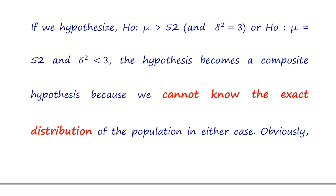These two examples are composite hypotheses because we do not know their exact distribution. In the first example we know the variance, but the mean is greater than 52 — we do not know its exact value. In the second case, mu is equal to 52, but sigma squared is less than 3 and its exact value is not specified.